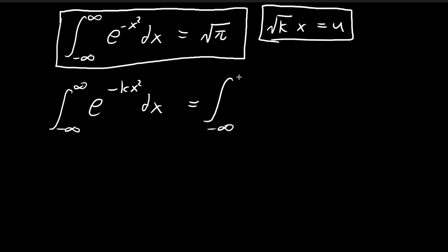the bounds still go from negative infinity to infinity. The e term becomes e to the power of negative u squared. And then you see that du/dx is equal to the square root of k, so du divided by the square root of k is equal to dx. I can replace the dx with this term over here.